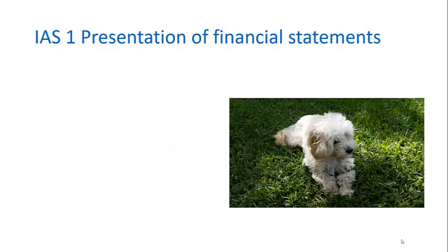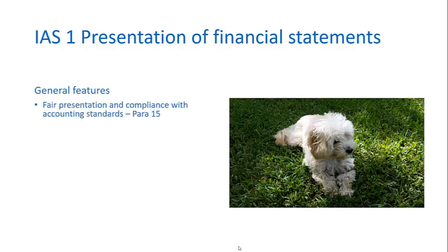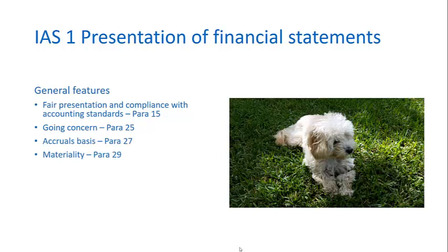Let's focus on the detail required by IAS 1 Presentation of Financial Statements, which very much dictates what financial statements generally look like. The general features include: financial statements are required to give a fair presentation and comply with accounting standards; they should be prepared on a going concern basis and use an accrual accounting basis. Materiality is mentioned again here, and the circumstances where offsetting is allowed or not allowed are addressed.